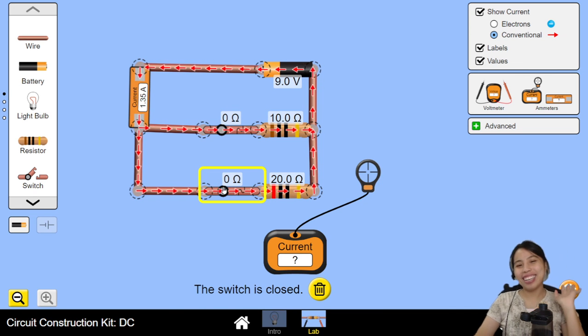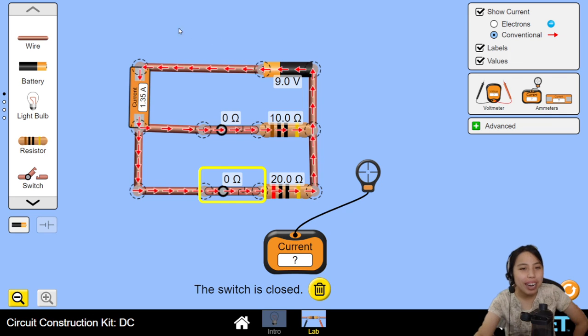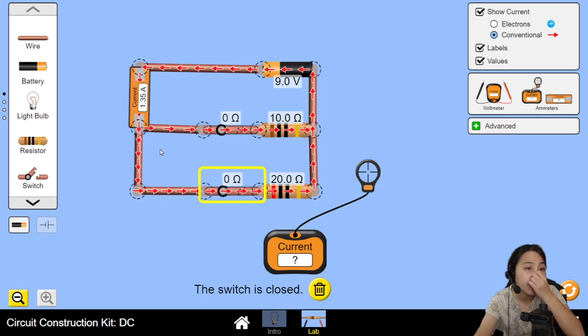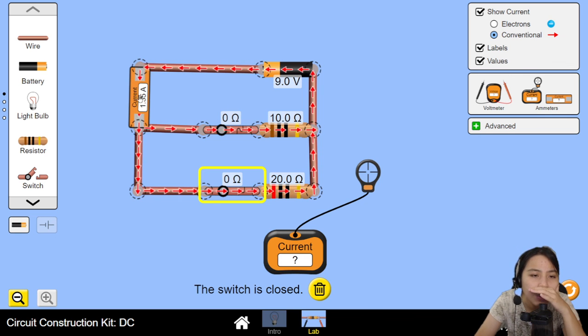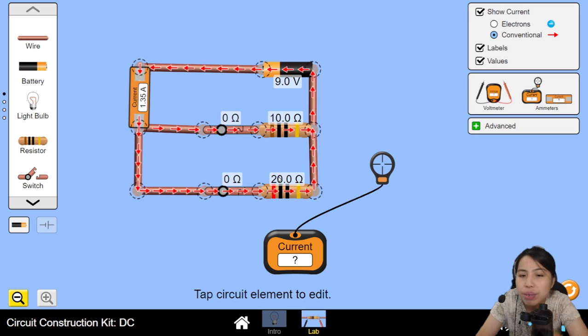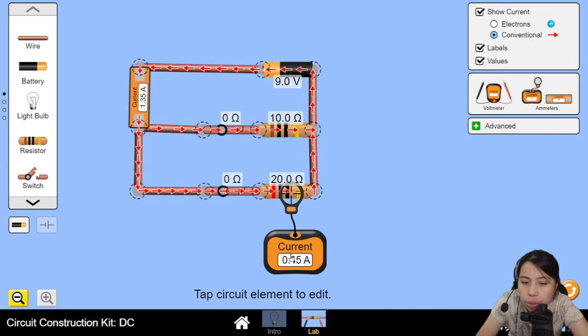So, you have current that is going to split right here. Some of them will go through the first resistor. Some of them will go down. And if this current is 1.35. This one is higher resistors. It should have a lower current. So, 0.45 only. The other one? 0.9. Double! 0.45 times 2 is 0.9.